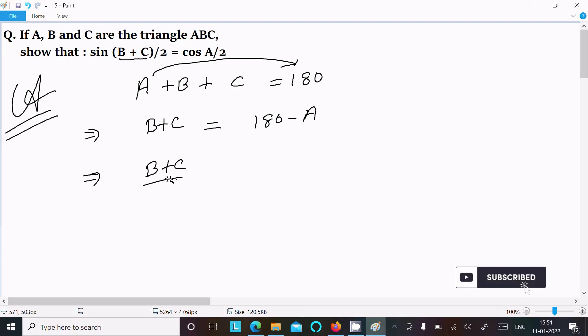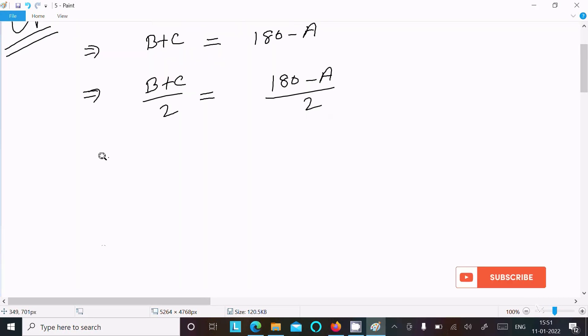Here (B+C)/2 = (180-A)/2, or we can write (B+C)/2, and this one we can write as 180/2 - A/2.